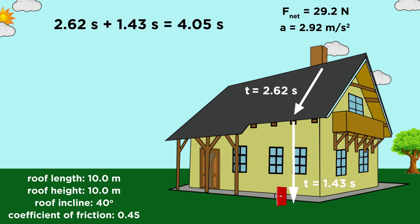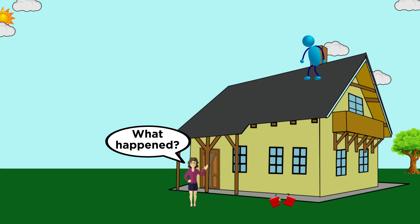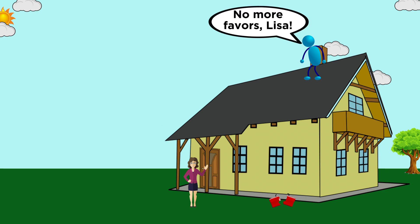Two point six two plus one point four three is four point zero five seconds, the total time for all of this chaos. Unfortunately, that means that when Lisa makes it out there five seconds after you shout for her, all she finds is the shattered remains of a trusty toolbox that once was. Sad, but hey, at least you don't have to do any more favors for Lisa.